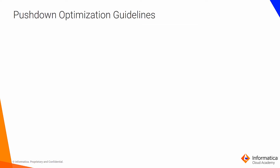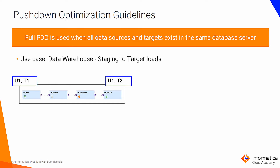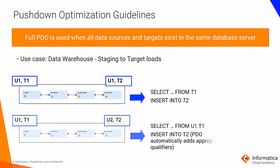Let us now discuss certain pushdown optimization usage guidelines. Full PDO is used when all data sources and targets exist in the same database server. The most common use case for full PDO is data warehouse staging to target loads. In the mapping shown, you extract the data, sort and aggregate it, and load it to the target. In normal execution, data is selected from T1 and loaded to T2. But when using PDO, the data is selected from U1.T1 and inserted into T2. PDO automatically adds appropriate qualifiers for database transactions to execute properly.